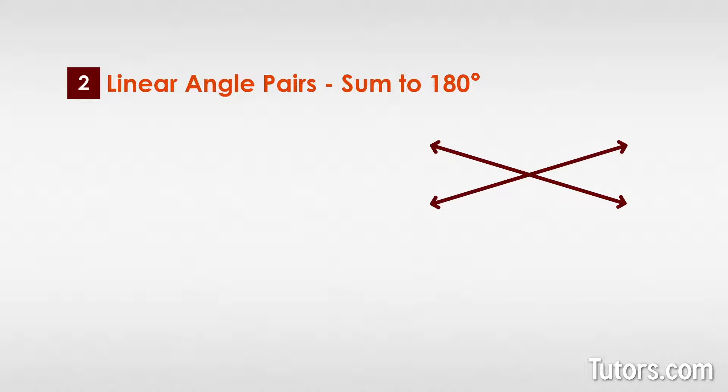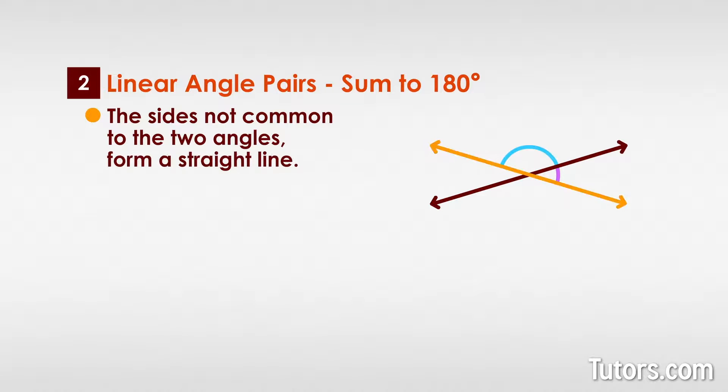Two interesting varieties of angle pairs sum to 180 degrees. These are linear pairs and supplementary angles. Linear pairs get their name because the sides not common to the two angles form a straight line.